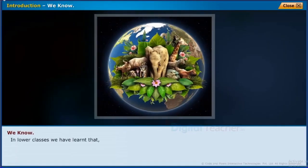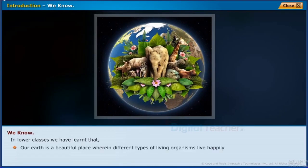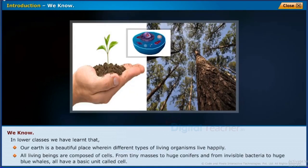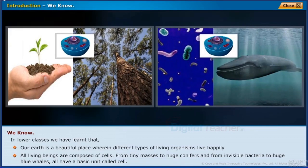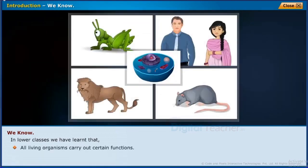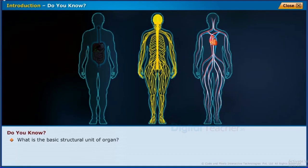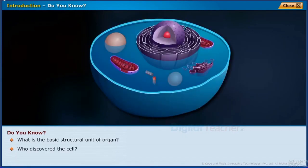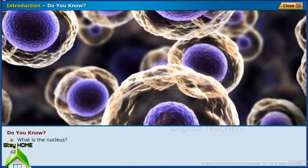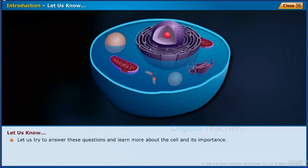In lower classes we learned that our Earth is a beautiful place where different types of living organisms live. All living beings are composed of cells — from tiny mosses to huge conifers, and from invisible bacteria to huge blue whales — all have a basic unit called the cell. All living organisms carry out certain functions. Key questions include: what is the basic structural unit of organs, who discovered the cell, what is the diversity in cells, and what is the nucleus?